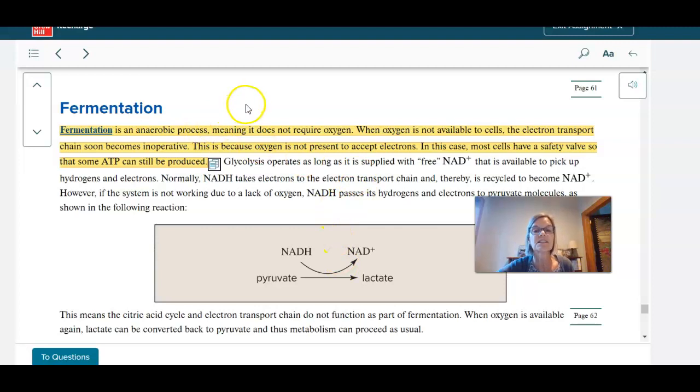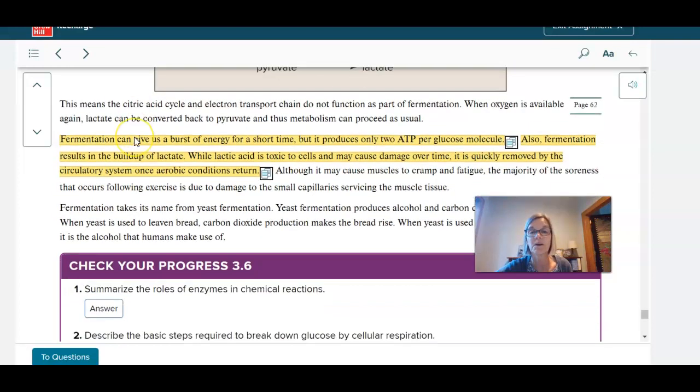And instead of using cellular respiration to make ATP, you're using fermentation in the absence of oxygen. Now the problem with that is you only make a little bit of ATP per glucose, so your muscles wear out quickly. Once you start fermenting, but at least it allows you to keep them going a little bit longer than if you just stopped functioning altogether. So that's what I want you to remember.